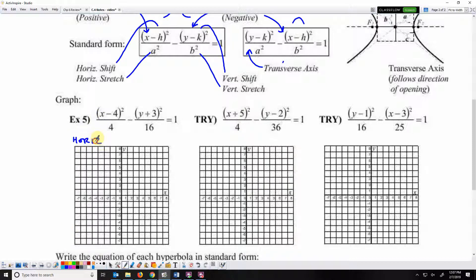This one has x first, so it opens horizontally. Its center is at positive 4, negative 3. We've got a horizontal dilation of the square root of 4, which is 2, so we're going to go 2 in either direction. And a vertical dilation of the square root of 16, which is 4, 4 up and 4 down. Around that we're going to make a little dotted rectangle.